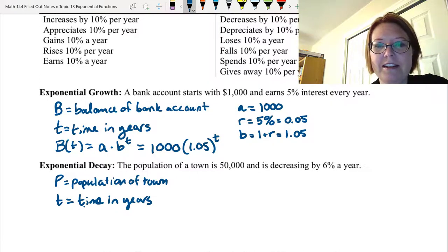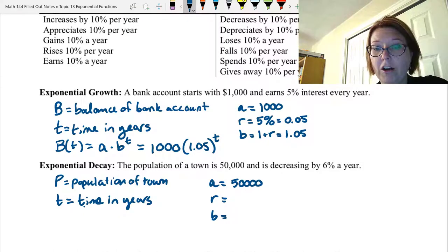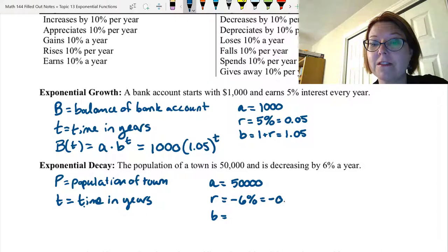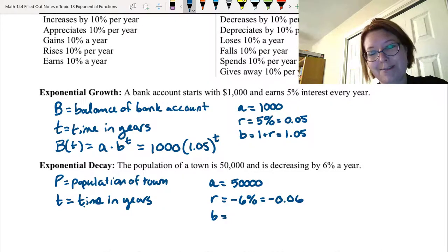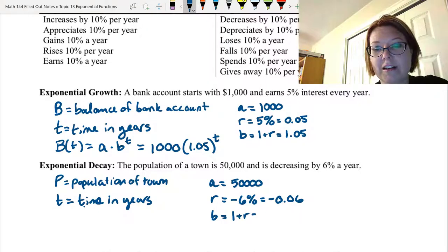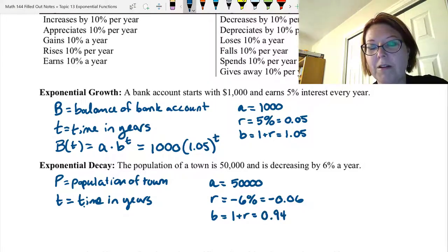All right, so let's see if we can nail down A, R, and B. A is the initial value. Our initial population is 50,000. R is the rate of increase or decreasing. In this case, we're decreasing by 6%. So we would write negative 6% or negative 0.06 when we write it as a decimal. B is just 1 plus R. So that's going to be 1 plus negative 0.06, which is going to be 0.94.